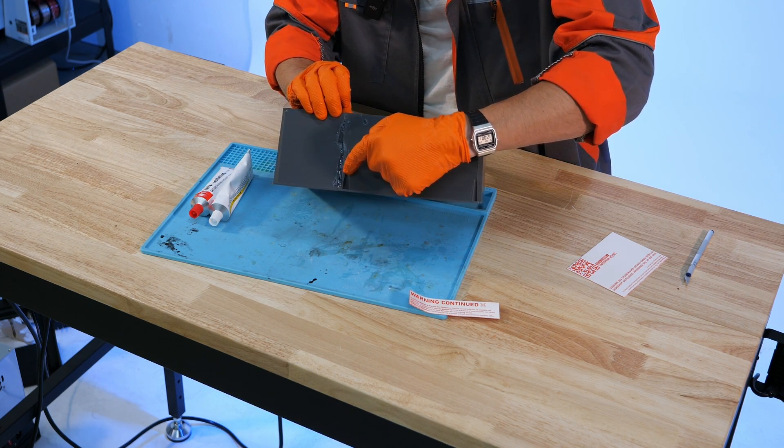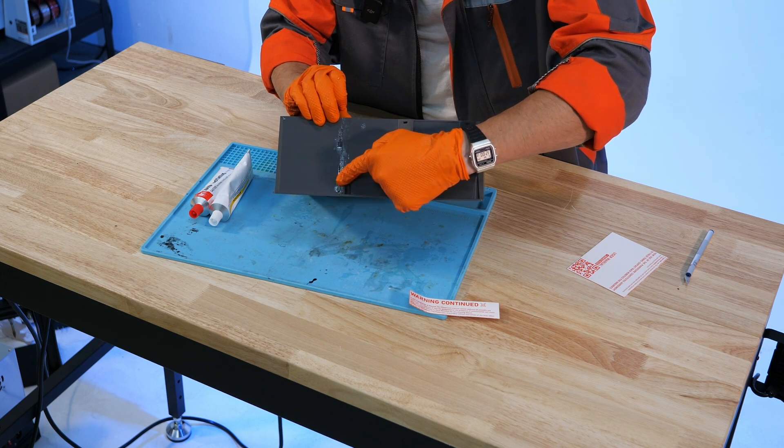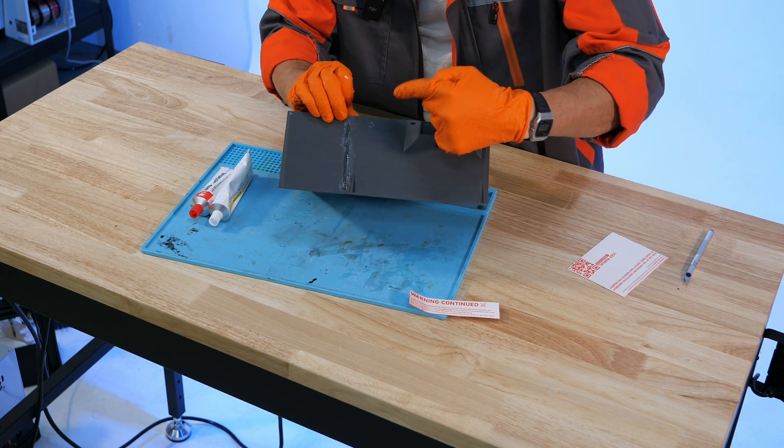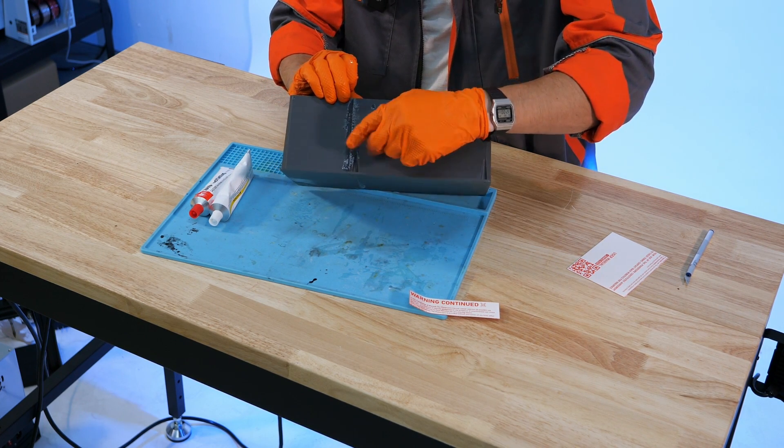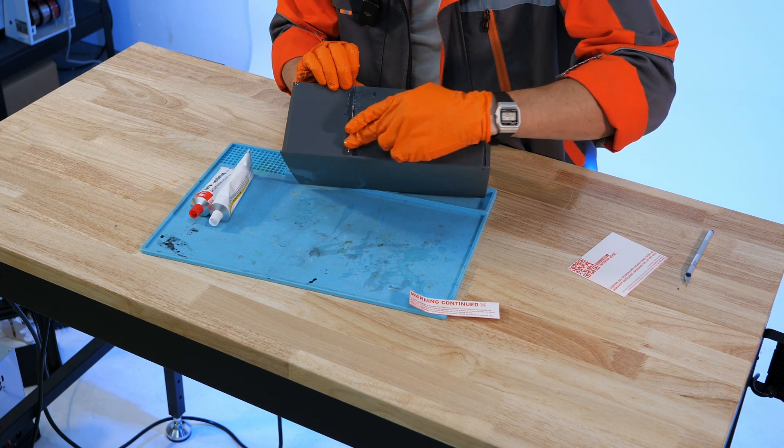You might even want to take some of that epoxy that's squishing out from the sides here and just drag it up the outside of your vat. The more we can get into these seams the better results we're going to have for that water tightening process.